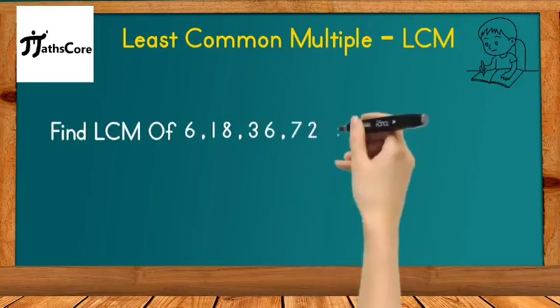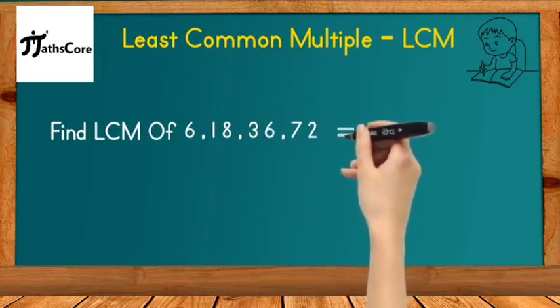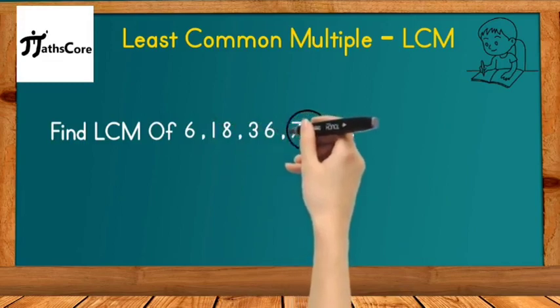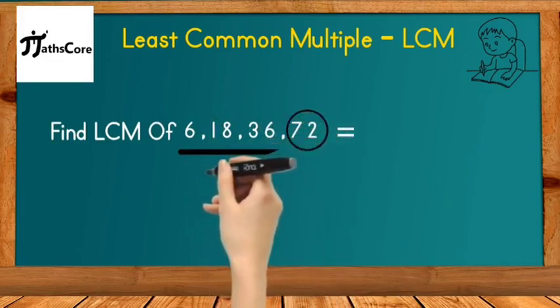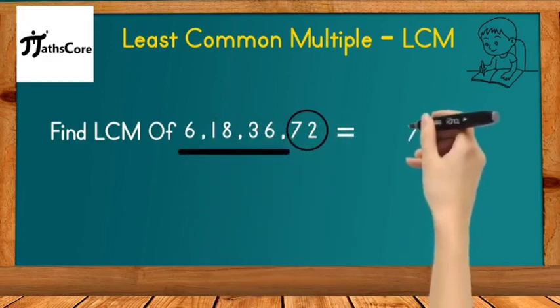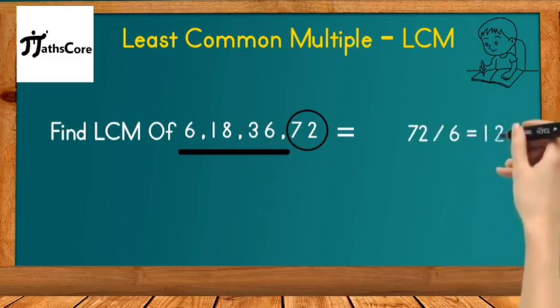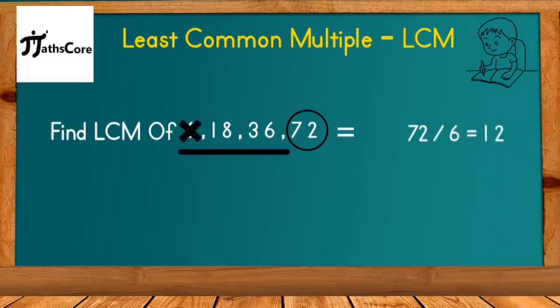To solve this using Vedic math technique, we need to follow some steps. First, focus on the biggest number, which is 72. Check if 72 is a multiple of the remaining numbers by dividing 72 by each number. First number is 6. 72 divided by 6 equals 12. Complete division is possible, so 72 is a multiple of 6.